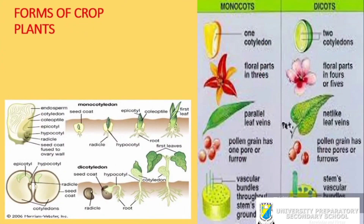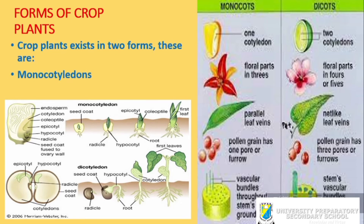Now we have the forms of crop plants — monocot and dicot. Crops exist as monocot or dicot. Monocot is coined from 'mono' meaning one, and 'cotyledon' meaning seed leaf, so monocotyledon means one seed leaf. Dicot plants have 'di' meaning two and 'cotyledon' meaning seed leaf, so dicot means two seed leaves. You can see them in the picture on this slide.